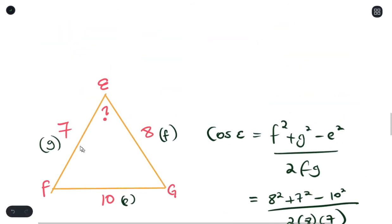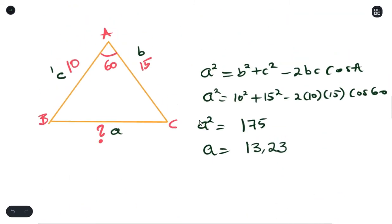You use cosine rule whenever you have three sides given with no angles, or you have two sides and an included angle. And that is cosine rule. Now that you understand the concept of cosine rule, let's move on to area rule.